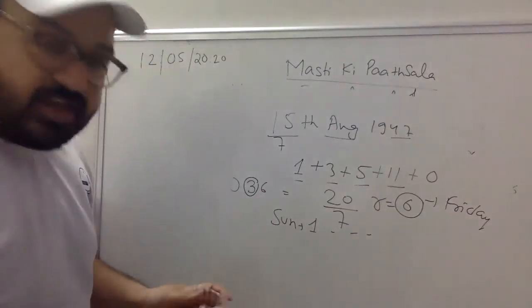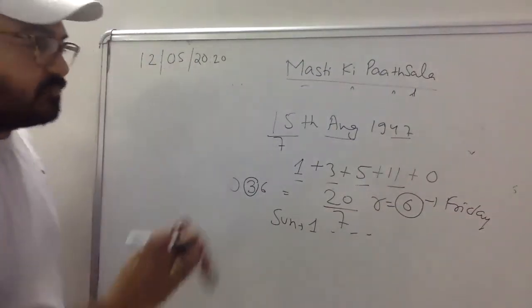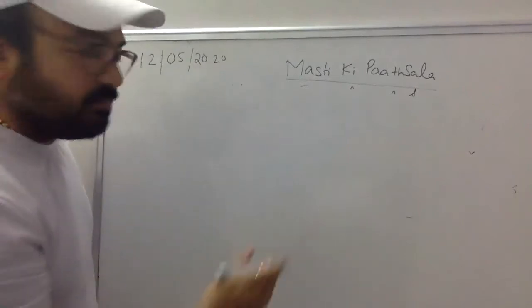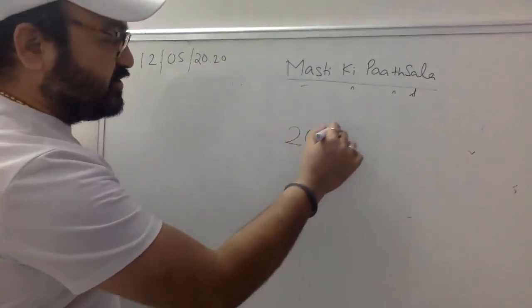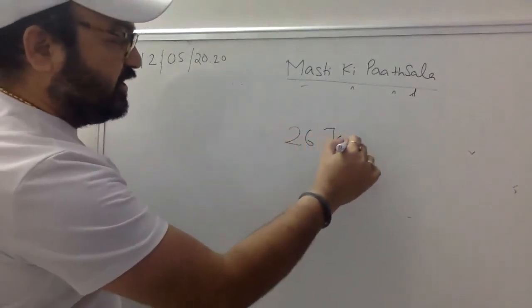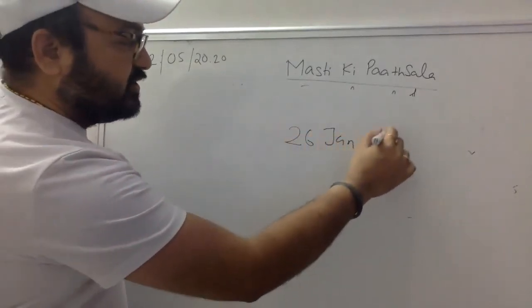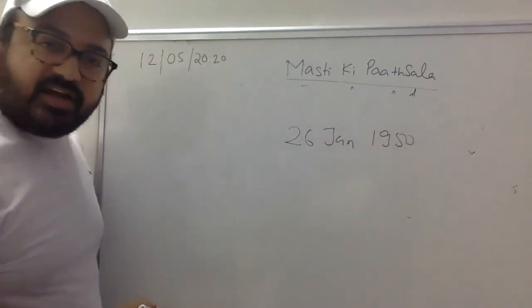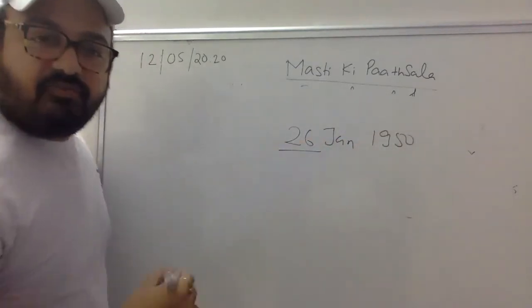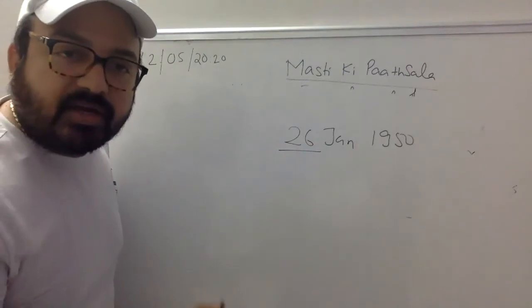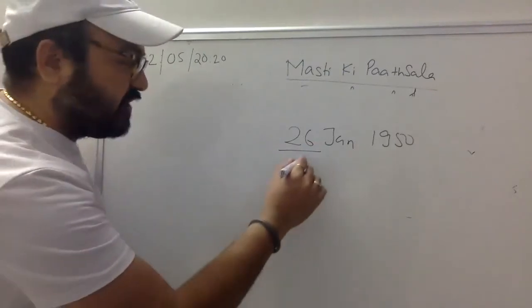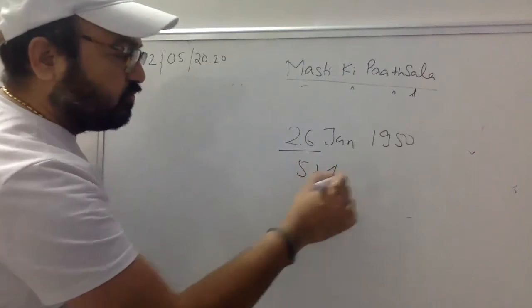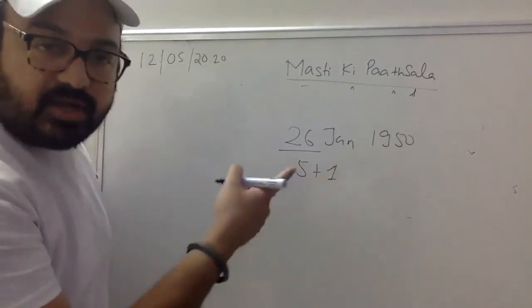एक और important देखते हैं: 26 January 1950, कौन सा दिन था? 26 को 7 से divide करो — 7×3=21, remainder 5. January का code: 1. Leap year नहीं है।